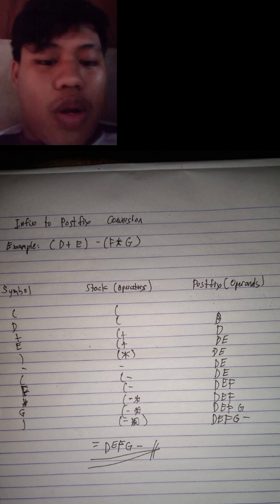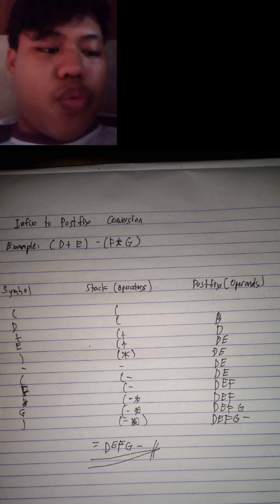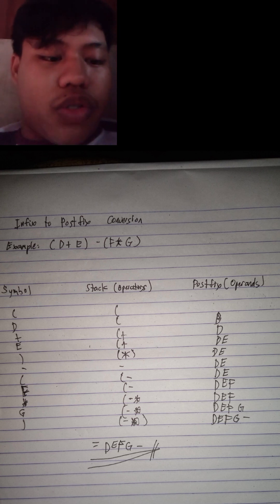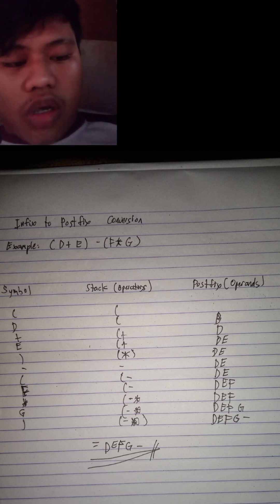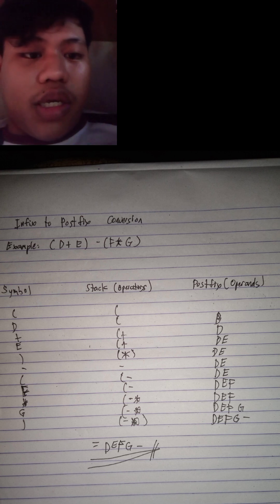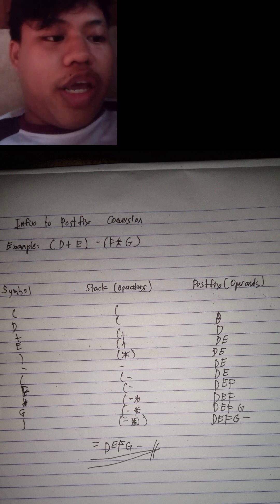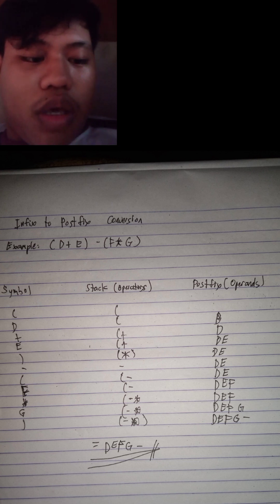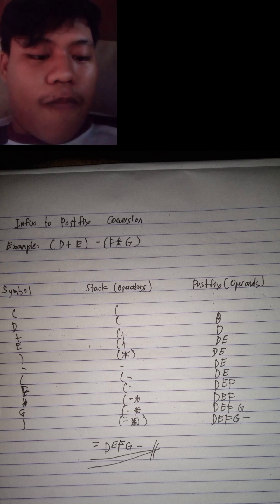In postfix, the next line is you will put the open parenthesis in symbol, and open parenthesis also with minus in stack operators. The next line, you will put the letter F in symbol — it will repeat again, putting open parenthesis and minus in stack operators. In postfix, D and E are there, and you will insert letter F.